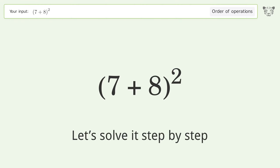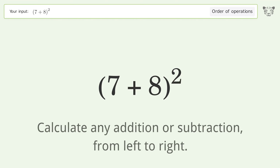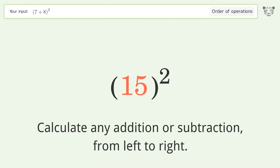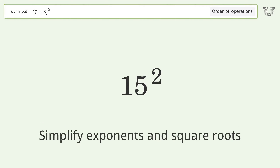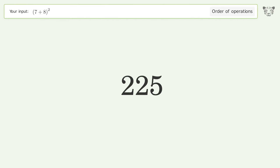Let's solve it step by step. Calculate any addition or subtraction from left to right: 7 plus 8 equals 15. Then simplify exponents and square roots: 15 to the power of 2 equals 225. And so the final result is 225.